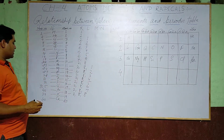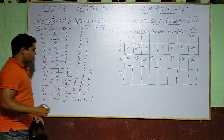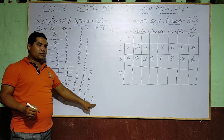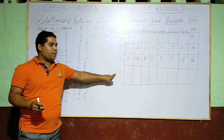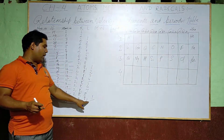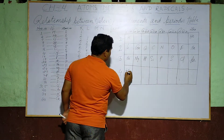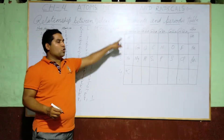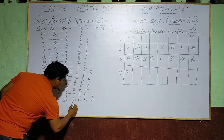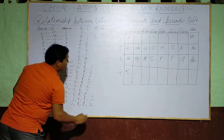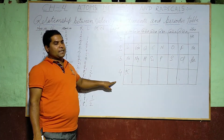Potassium has configuration 2, 8, 8, and 1 — four shells are required for its electronic configuration, so it is placed in Period 4. The outermost valence electron is 1, so the group is 1A. Calcium has configuration 2, 8, 8, and 2 — placed in Group 2A, Period 4.